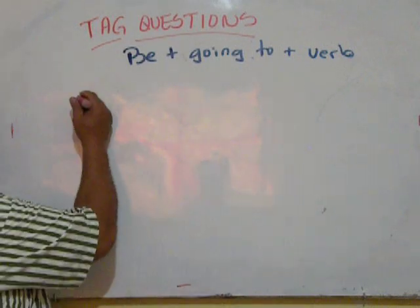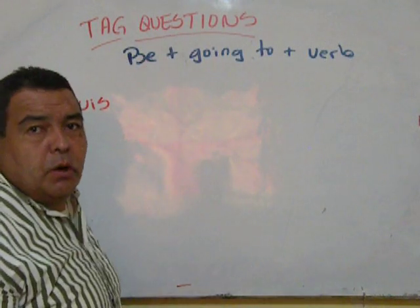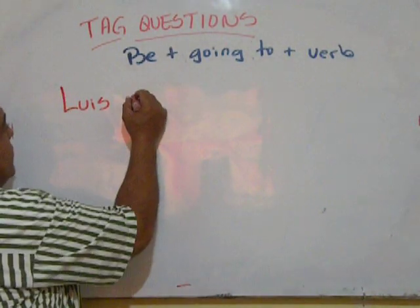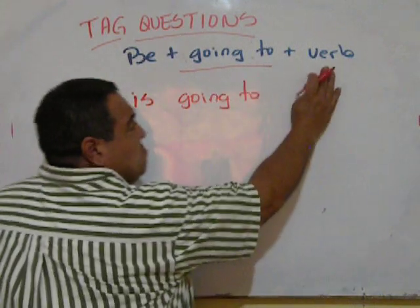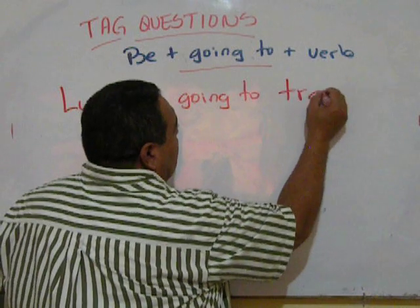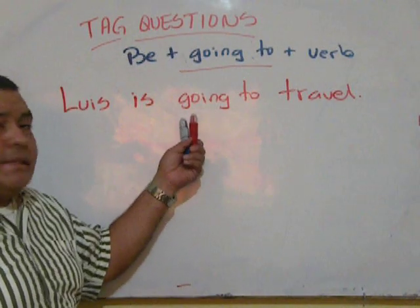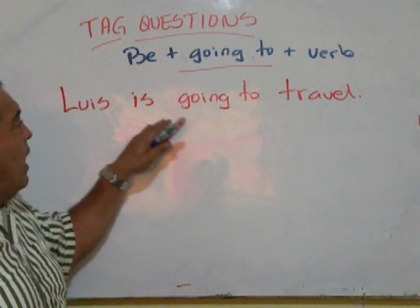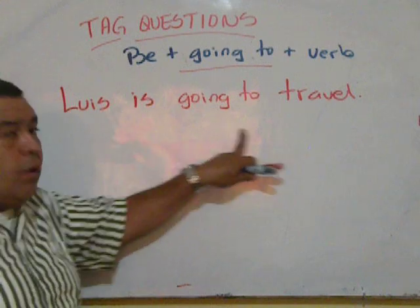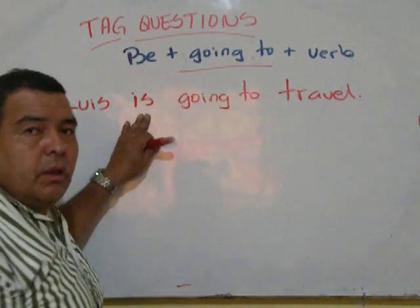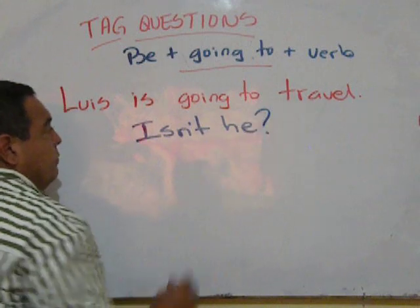So, in this case, very quickly, let's say, for example, Luis, which form of be does Luis use? Is going to, let's think of a verb, travel. This future, Luis is going to travel. Now, this tag question is going to go based upon be. Luis is going to travel. So, the tag question has to go with be. Isn't he?